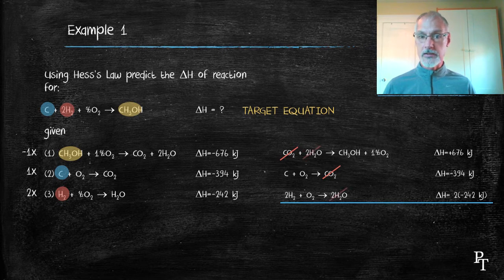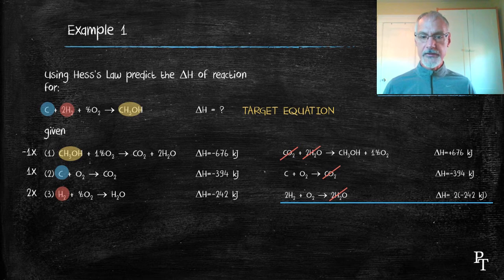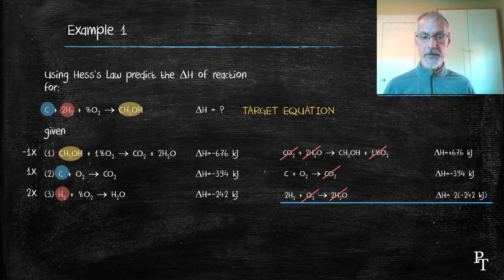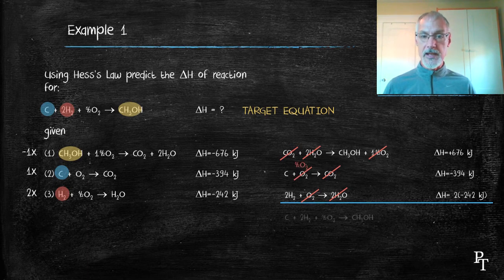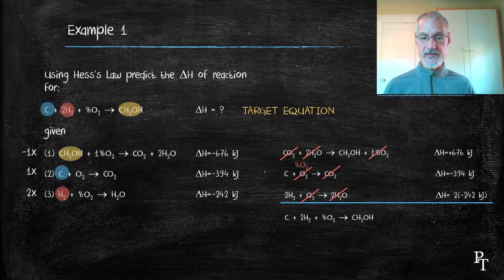The two water molecules are common to both sides. Now the oxygen, there's one and a half on this side, so I can cancel it with the one here, as well as half of this one. So what I'm left with now when I add up the overall equations is this. This matches my target equation.